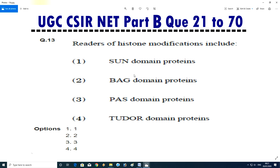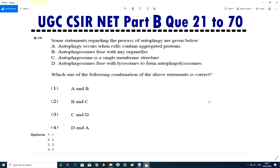Question No.13 - Readers of histone modification include SUN domain protein, BAC domain protein, PHD domain protein, or Tudor domain protein. Answer is D, Tudor domain protein.